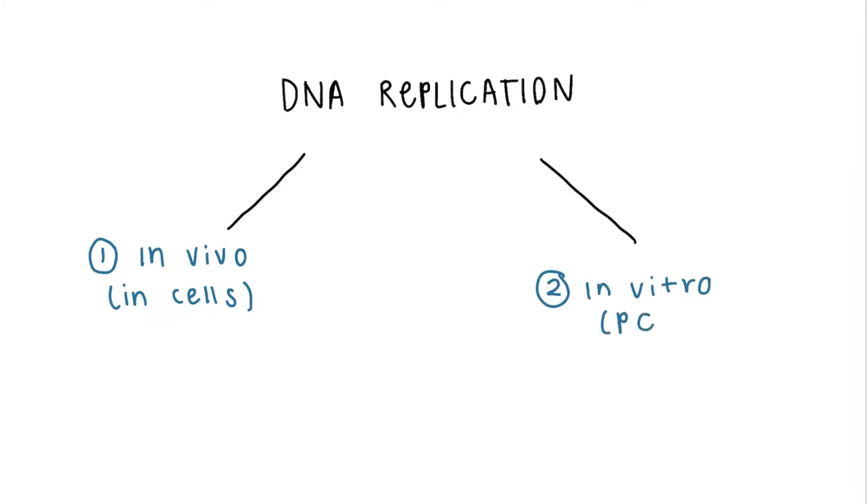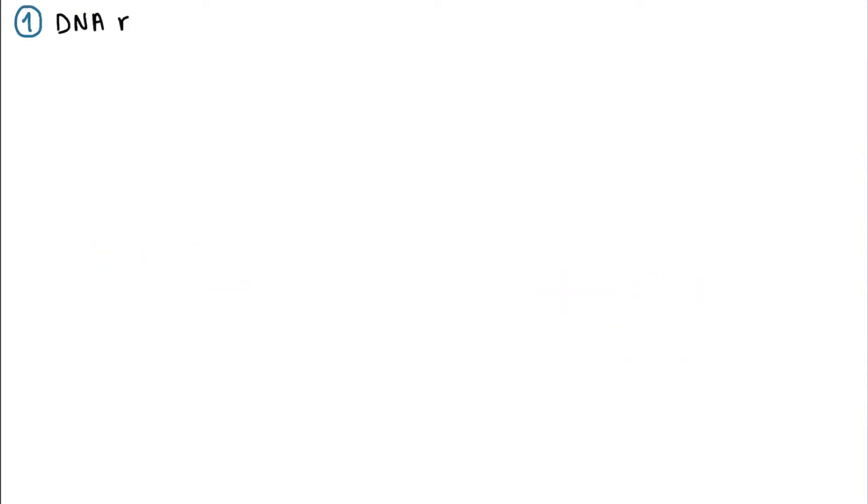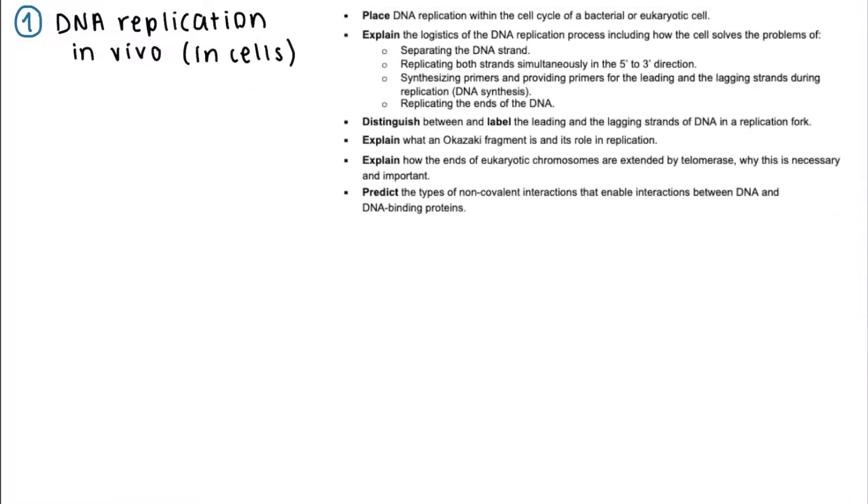In the end, we will walk through some practice problems relating to primers and PCR. The first of these processes that we're going to go over is DNA replication in vivo, or in cells, and these are the learning objectives that we're going to be covering. They're all the ones in unit 2.3.